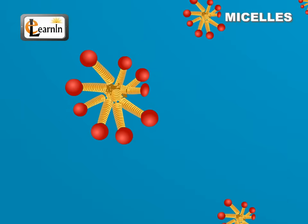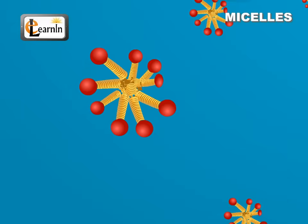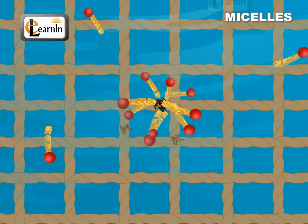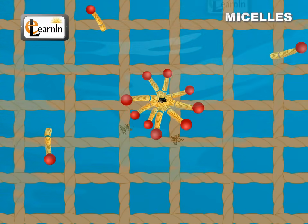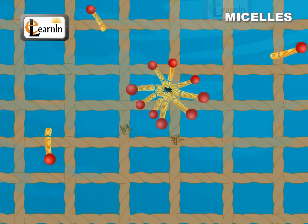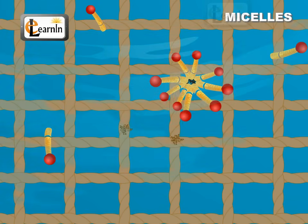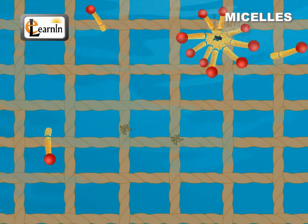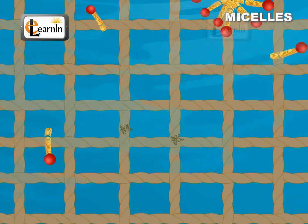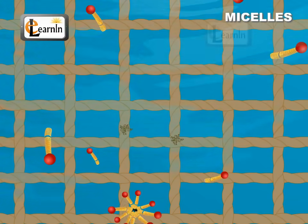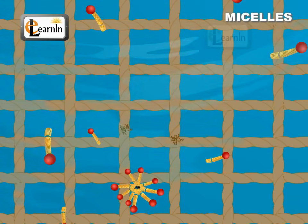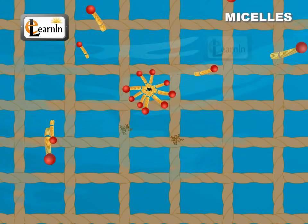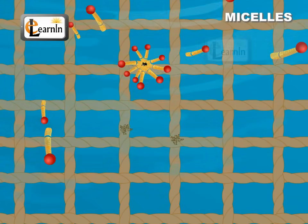The mechanism of soap cleansing is attributed to these micelles. Soap in the form of micelles is capable of cleaning since the oily dirt will be collected in the centre of the micelle due to the hydrophobic tails. The micelles stay in solution as a colloid and will not come together to precipitate because of ion-ion repulsion.